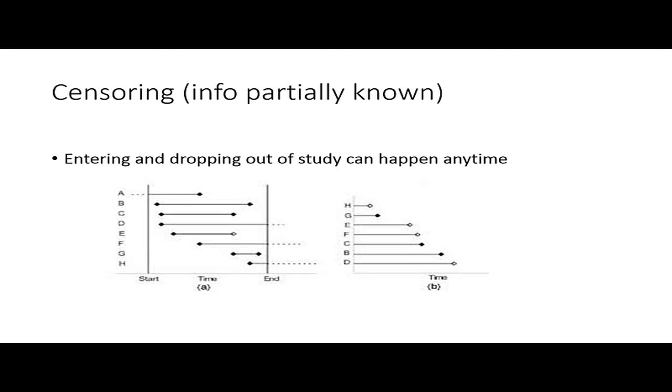In survival analysis we encounter a special kind of data known as censored data. Censored data are basically data about which we have partial information. If you are doing a study on a group of patients, some of the patients may enter into the study halfway and some of them might drop out of the study halfway also.